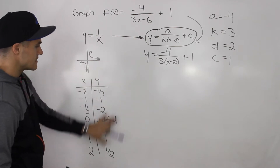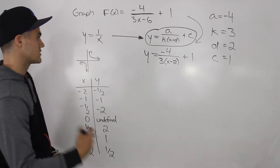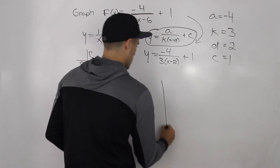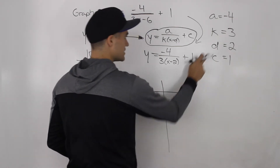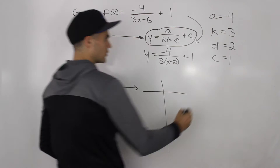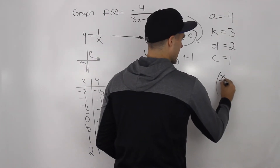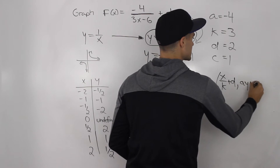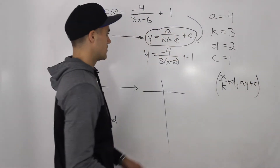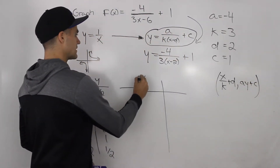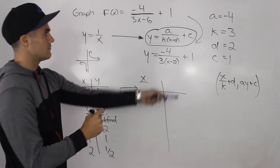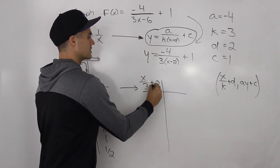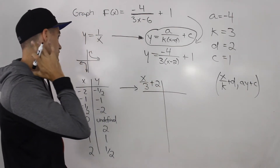We're going to take these coordinates and map them using the transformation values. The general mapping formula is (x/k + d, ay + c). In this case, we take the x values, divide them by the k value of 3, and then add the d value of 2.